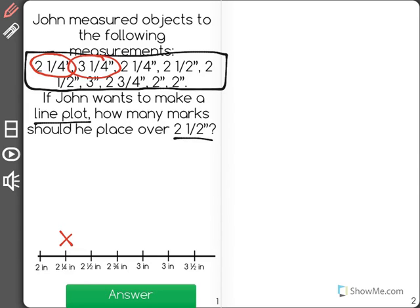Then we have 3 and 1 fourths. So 3 and 1 fourths, it should be this one right here. That's mislabeled. It should have an x. 2 and 1 fourths will have another.